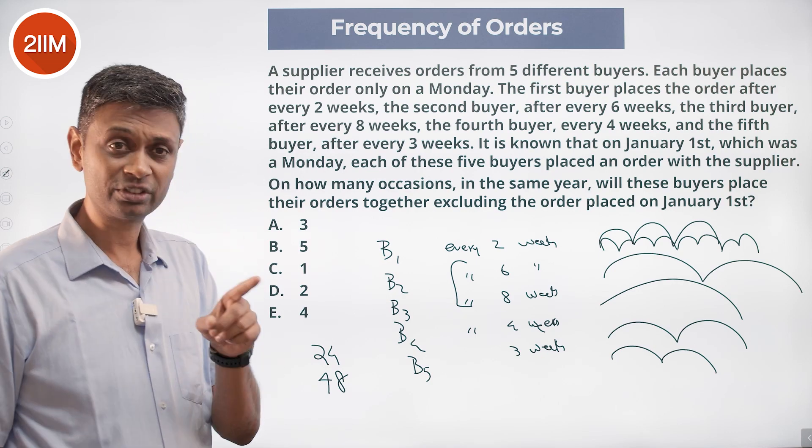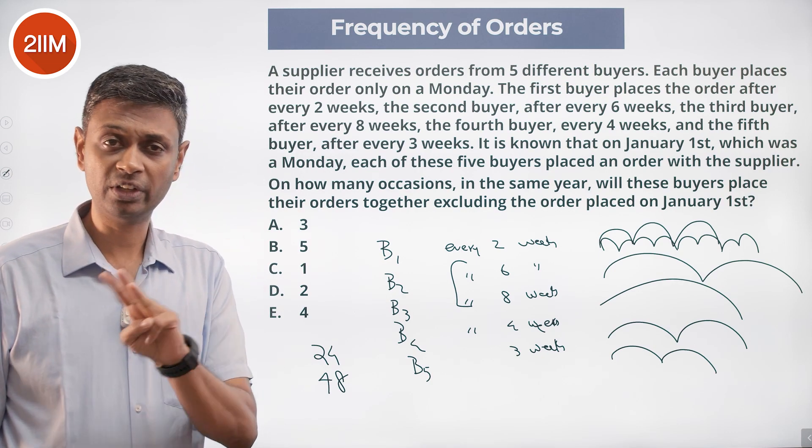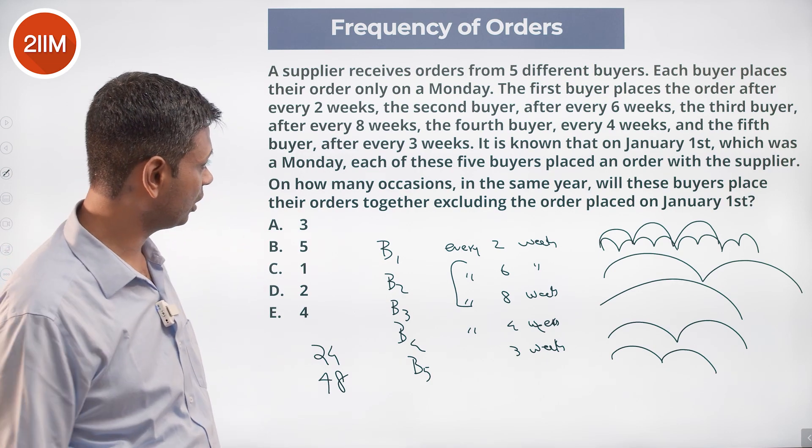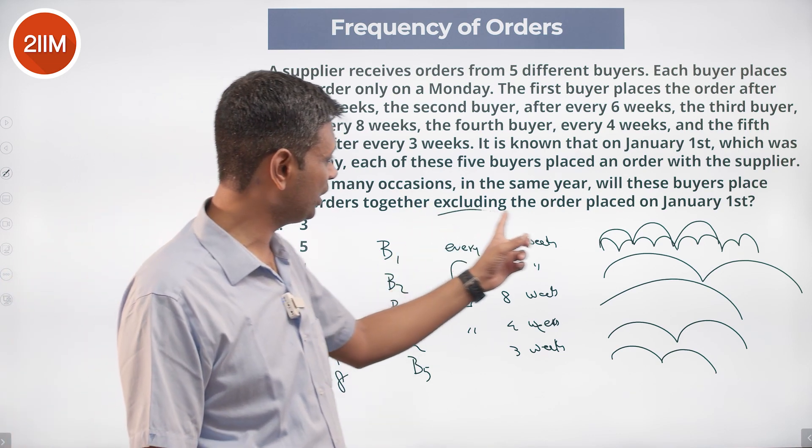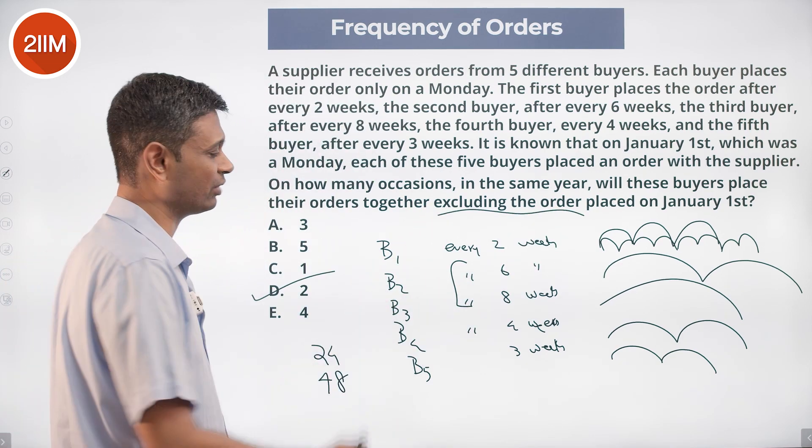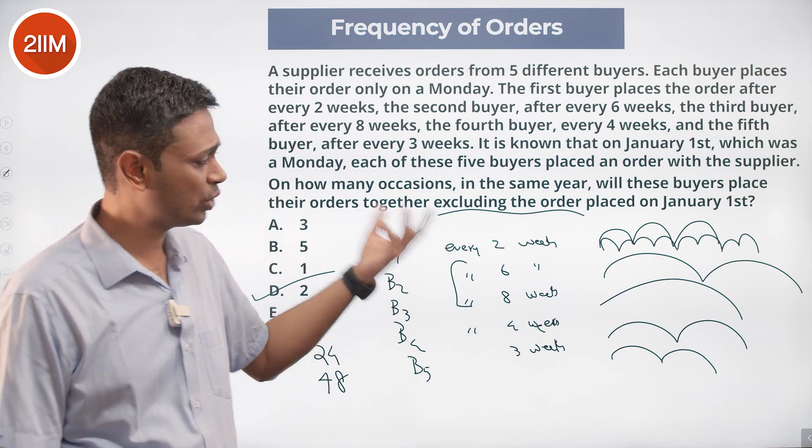Jan 1st, 24 weeks after that, 48 weeks after that - it happens thrice in the year. But excluding the order placed on Jan 1st, that is two times. A classic question with LCM. The language gives it away.